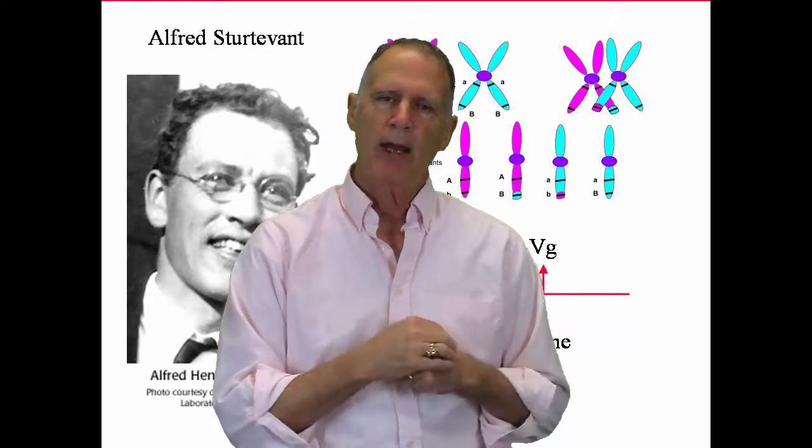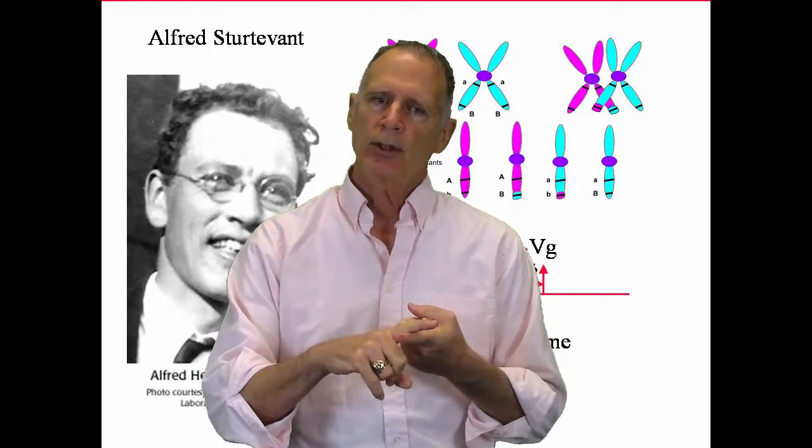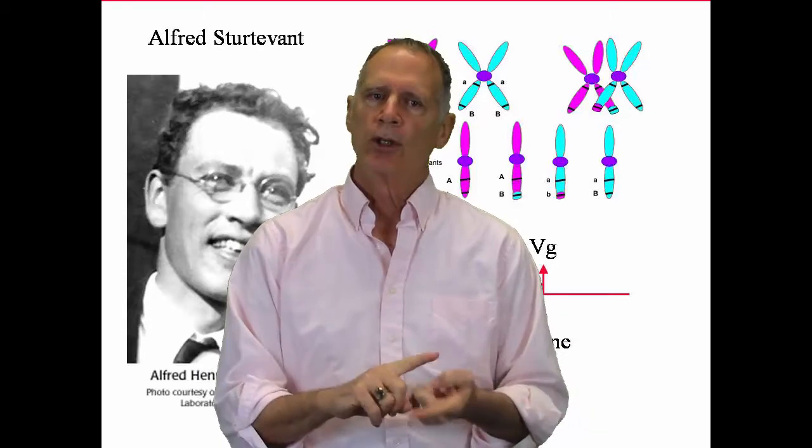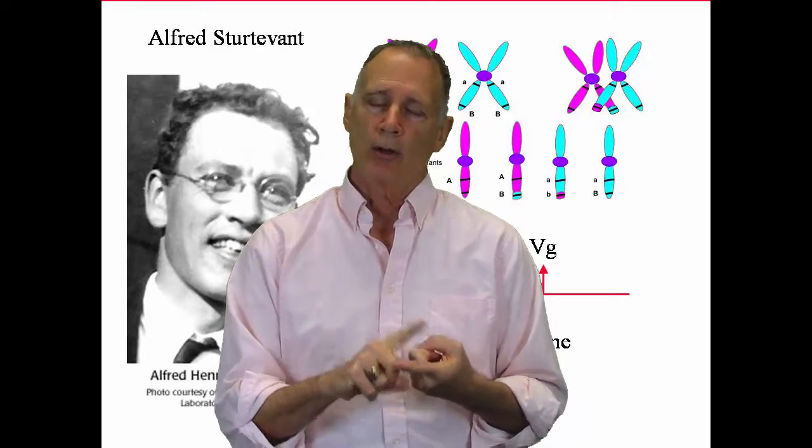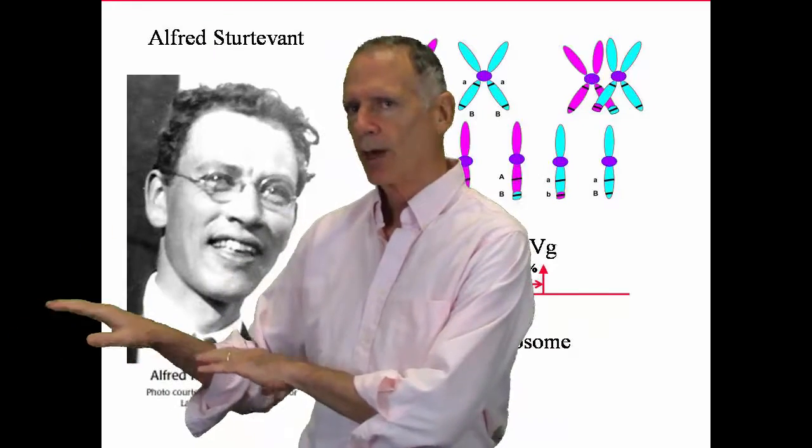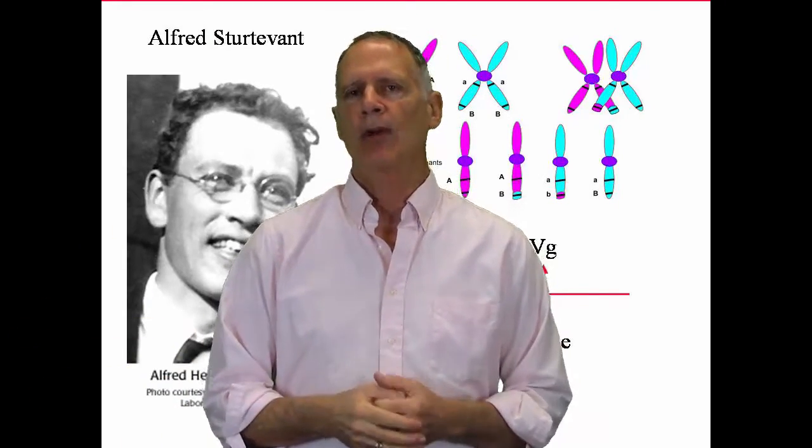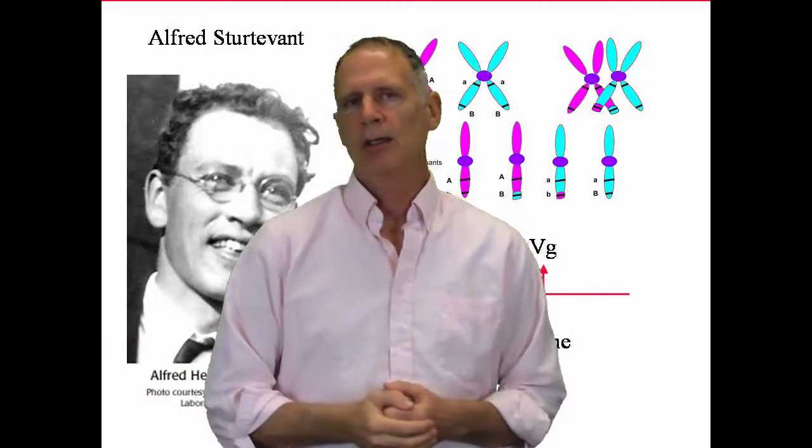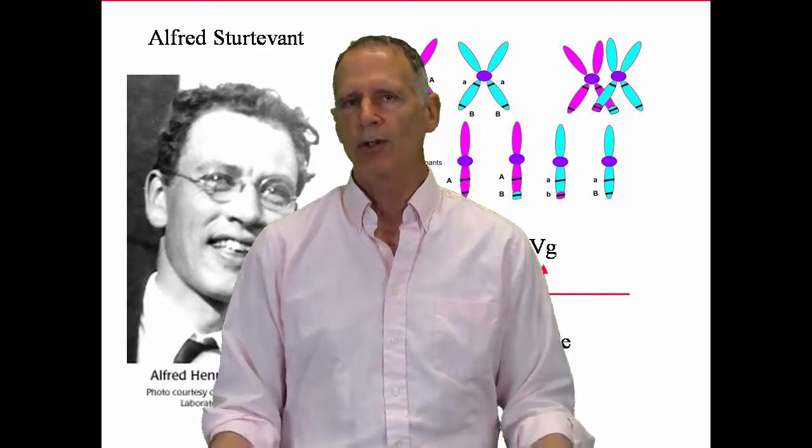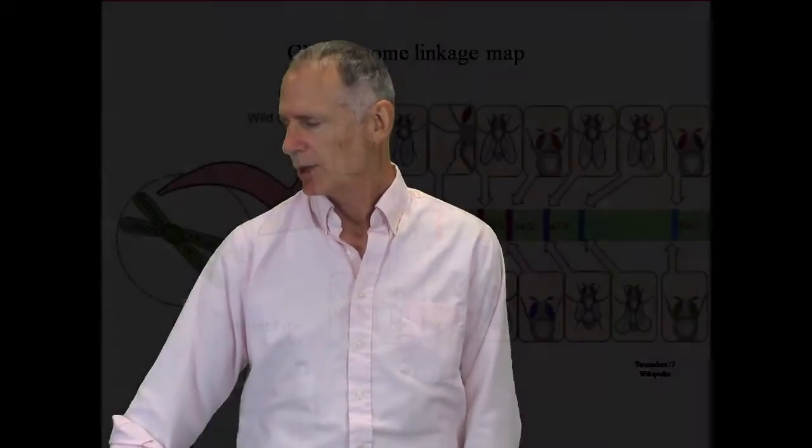And to take you back to that meiosis, I mentioned that those color variations were the reason that, or crossover was the reason for those color variations in the final product of meiosis. When the sperm or the egg are being created, you get an immense diversity because of this crossover, which is really quite astonishing.